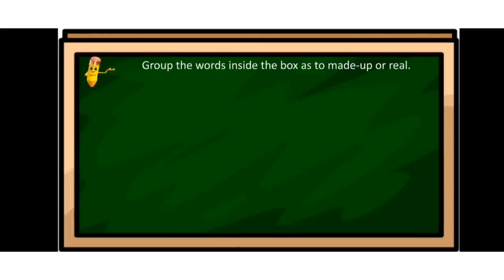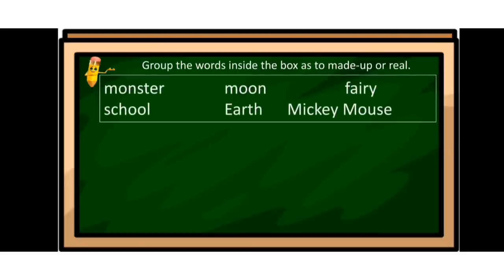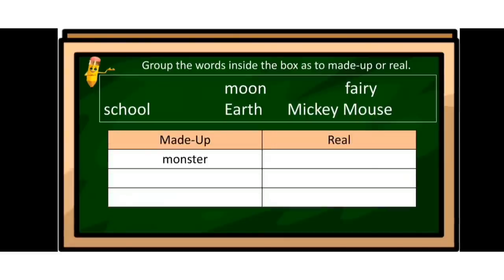Let us have another activity. Group the words inside the box as made-up or real. The words are: monster, school, moon, earth, fairy, and Mickey Mouse. Monster is made-up. Next word: school — is it made-up or real? Yes, school is real.